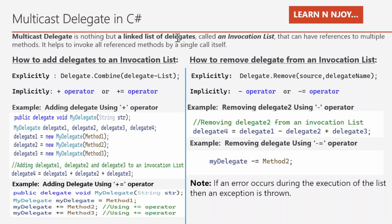Now we understand that a Multicast Delegate is a linked list of delegates, but how can we add delegates into the invocation list? There are two ways — either we add it explicitly or implicitly. For adding delegates explicitly into the invocation list, we need to use the delegate's Combine method, where we need to pass the delegate list like delegate1, delegate2, and so on. We can also pass an array of delegates.